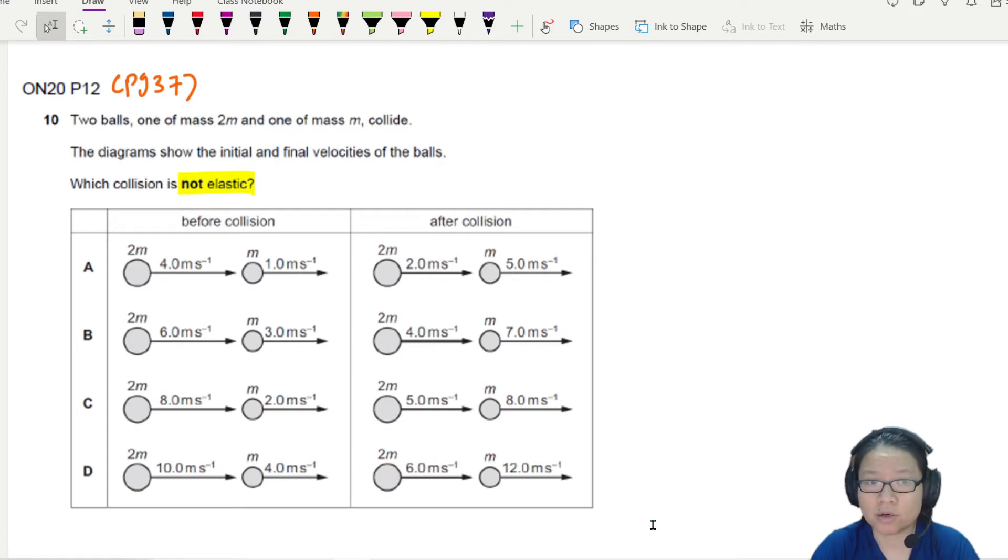When you're given the scenario this way, we would suggest that you use the shortcut which is the relative velocity equation. Depending on how it's being memorized to you, I will take maybe u2 minus u1 equals v1 minus v2.